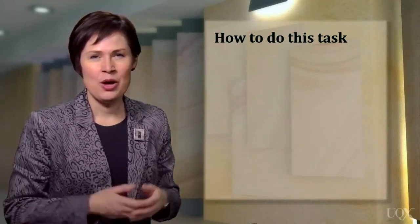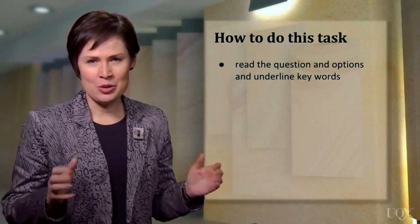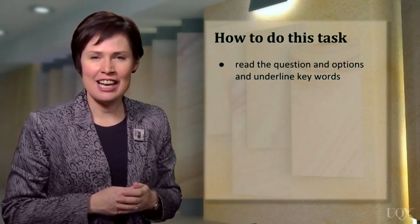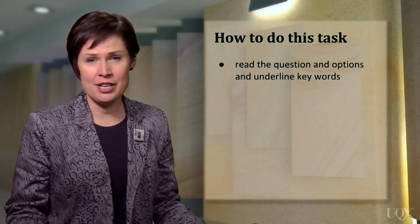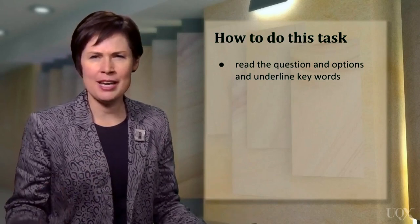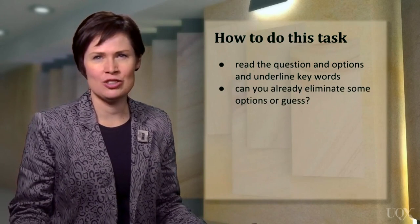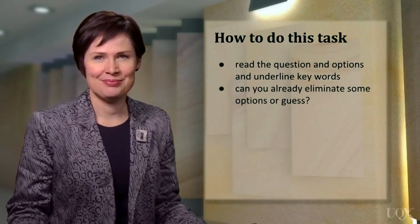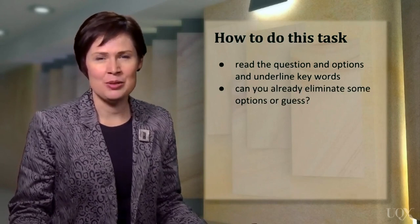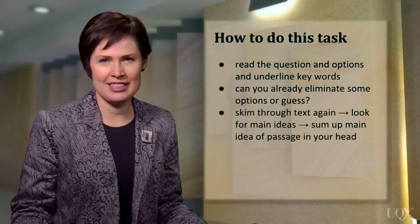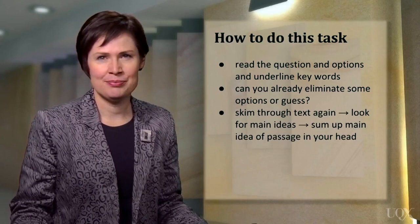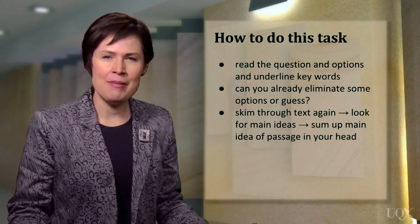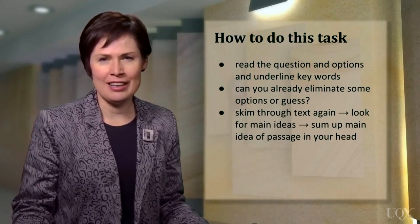So what is the best way to approach this task? First of all, read the question and the options and underline keywords. From your reading of the text in previous tasks, you may already be able to eliminate some options or guess the answer. However, if you need to, quickly skim through the text again, looking for the main idea in each paragraph. Try to sum up the main idea of the passage in your mind.